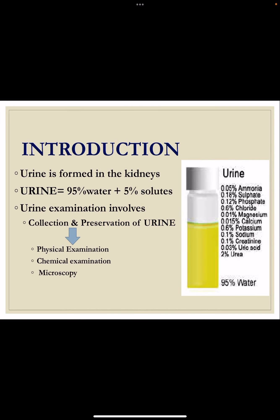Urine is formed in the kidneys and it is the ultrafiltrate of blood, carrying the metabolic waste of the body. 95% of it is composed of water and 5% are solutes. The important solutes are urea, chlorides, sulfates, and phosphates — these are the constituents found in urine.